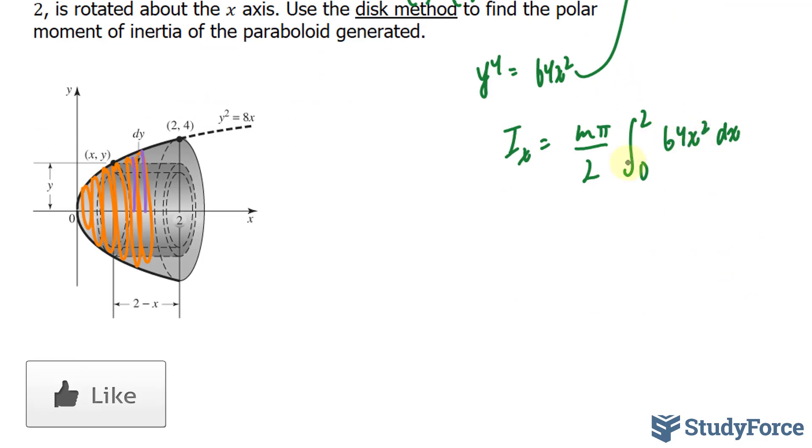Finding the antiderivative of this term is very easy. All you do is you add 1 to the exponent and take the sum and divide by 3. This gives us m pi over 2, the antiderivative of 64x to the power of 3 over 3, when x is 2 and 0.